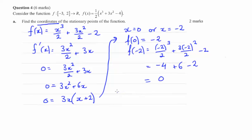So we can state our stationary points. We have 0 comma negative 2 and negative 2 comma 0.